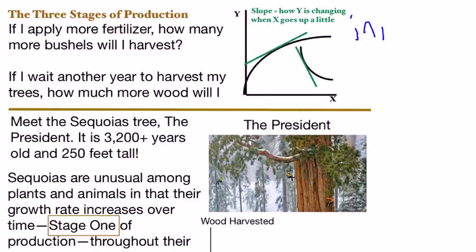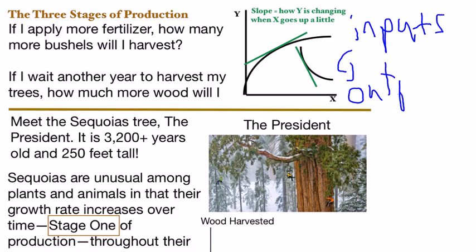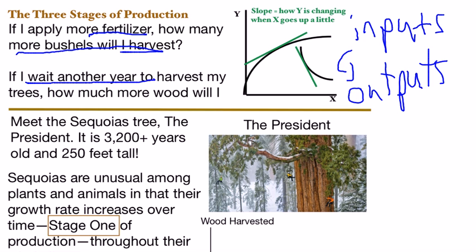The purpose of this video is to talk about the production process whereby a business purchases inputs, uses them in a production process to create outputs like wood or wheat, sells those outputs, and hopefully the money raised from selling outputs is greater than the money paid for inputs so they turn a profit. Two examples are fertilizer being an input giving you more wheat, or waiting another year for trees to grow giving you more wood — waiting is an input because it's a decision you make that increases the amount of wood you can harvest.